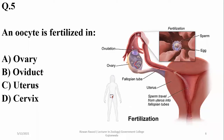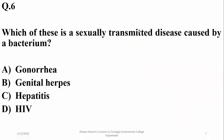Question number six: which of these is a sexually transmitted disease caused by a bacterium? It is gonorrhea. Genital herpes, HIV, and hepatitis are viral diseases.